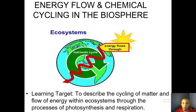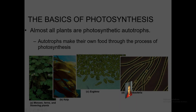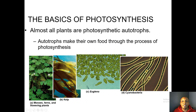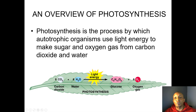Let's begin by looking at the basics of photosynthesis. Almost all plants are photosynthetic autotrophs — that means they use sunlight to help make food for themselves, and autotrophs make their own food through the process of photosynthesis. Here are some examples of photosynthetic autotrophs: mosses, ferns, flowering plants, kelp, euglena, and cyanobacteria.